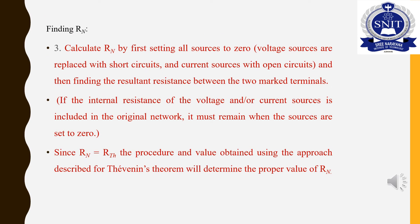We find Norton's Resistance. The voltage source is replaced by a short circuit and current sources are replaced with open circuits. Then we find the resultant resistance between the marked terminals. If the internal resistance of voltage or current source is included in the original network, it must remain when the sources are set to zero.